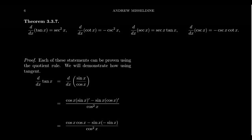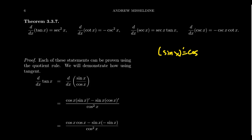In this video I want to consider the derivatives of the other four trigonometric functions. We've already considered the derivative of sine and cosine. We know that the derivative of sine is equal to cosine, and the derivative of cosine is equal to negative sine of x.